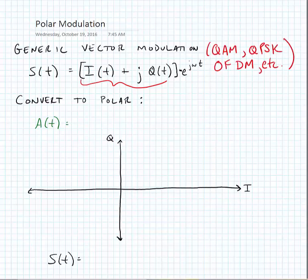So here we're modulating the carrier waveform which we're representing by this e^(jωt). So if we convert this to polar, we just need to do a vector transformation from the Cartesian coordinate system to the polar coordinate system.